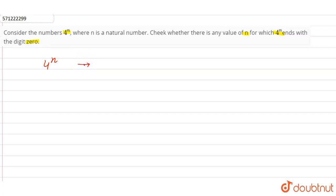check that, we have to check that either it is divisible by 5 or not. And why are we checking for 5? Because we know that any number that's unit place is 0 or 5 is divisible by 5.